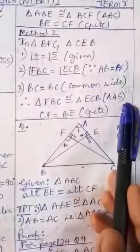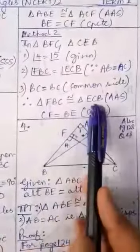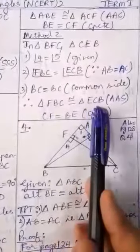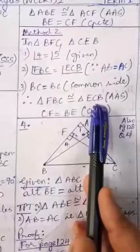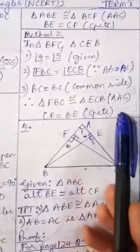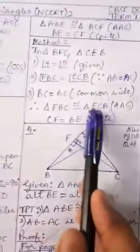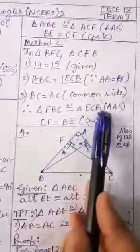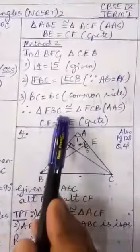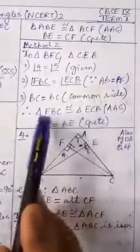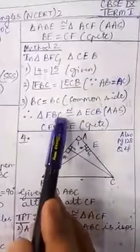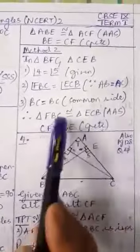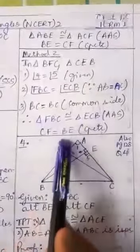By the AAS congruence criterion, the two triangles are congruent to each other. Now that the triangles are congruent, their corresponding sides and angles are equal. We need to show that BE equals CF. Since triangle BFC is congruent to triangle CEB, we have EB equal to FC, that is CF equals BE, by CPCTC.